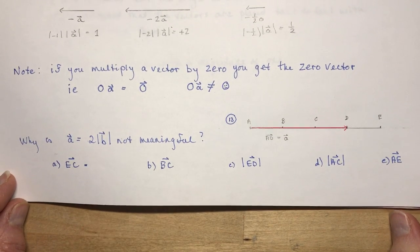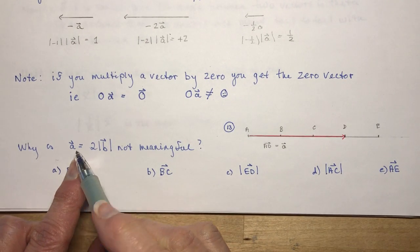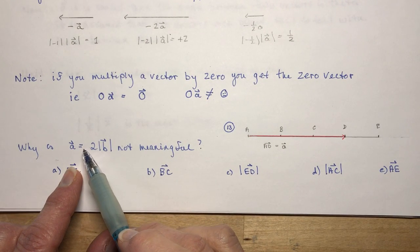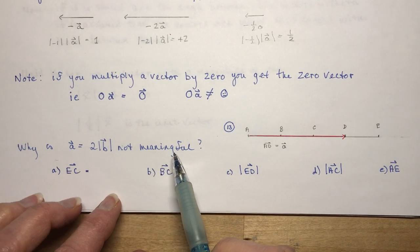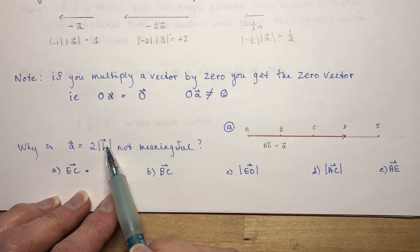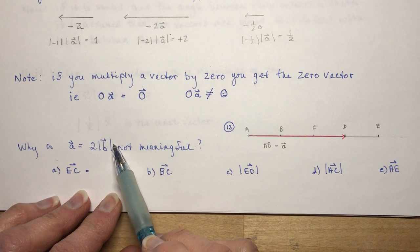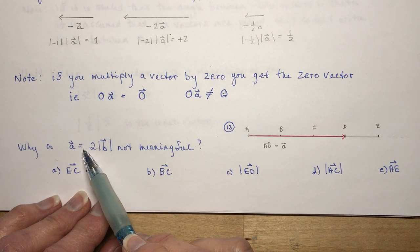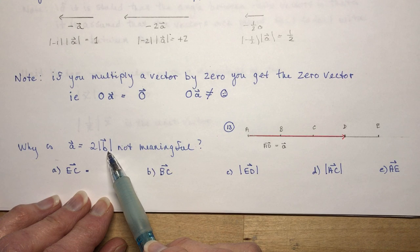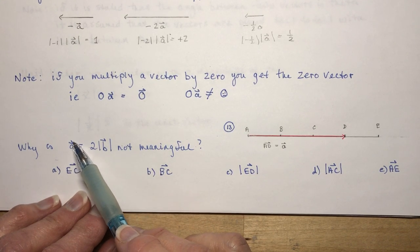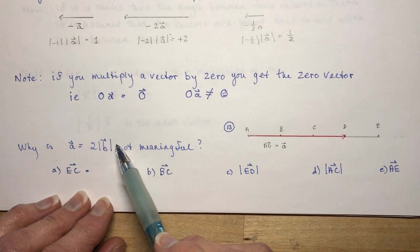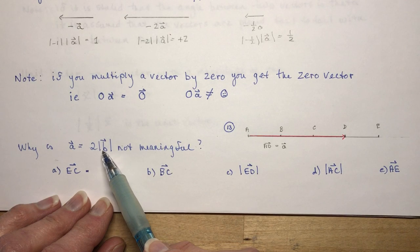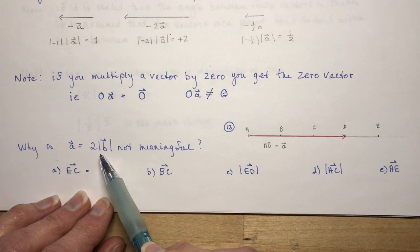In your homework, the first question asks: why is vector A equal to 2 times the magnitude of B not meaningful? It's not meaningful because this is a magnitude — you can't say a vector is equal to a magnitude. A vector equals a vector. You could say vector A equals 2 times vector B without absolute value signs, meaning A is 2 vector Bs, not 2 magnitudes of vector B.